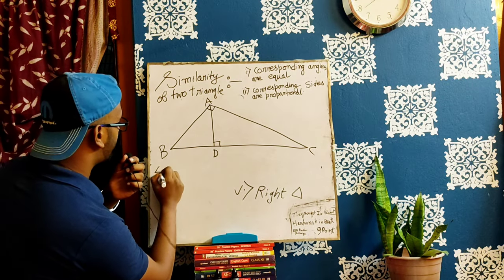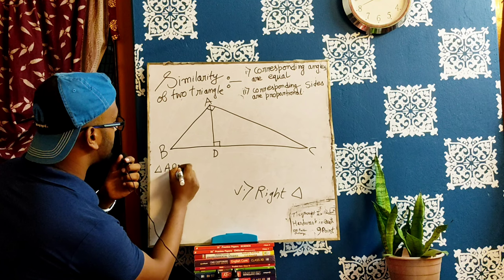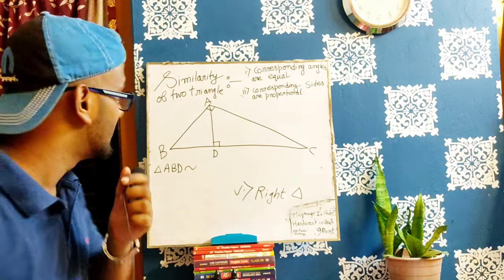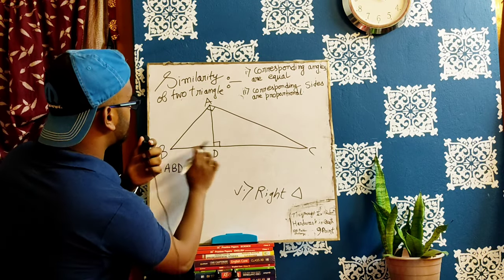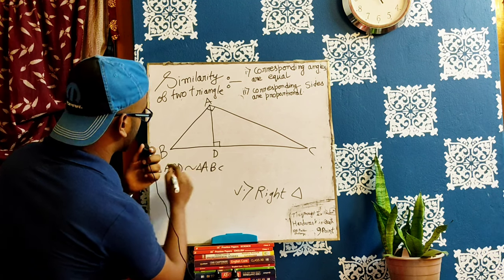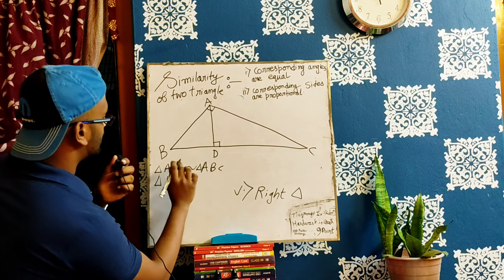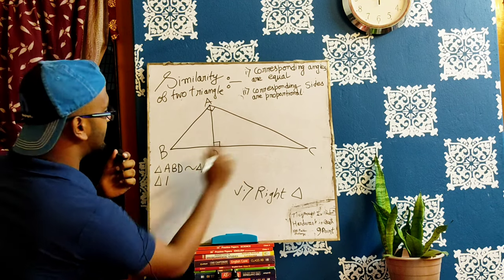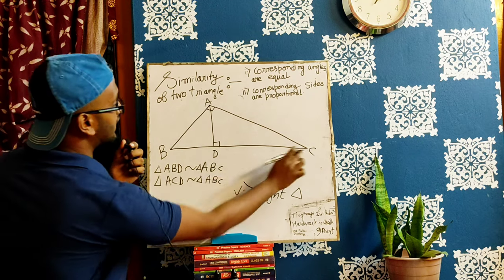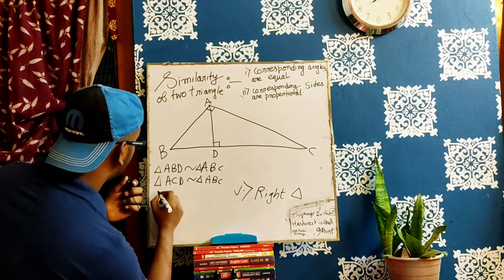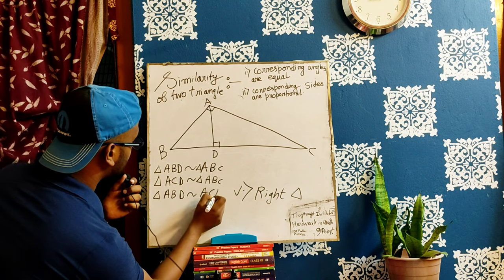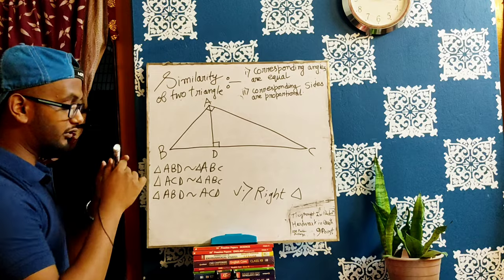Triangle ABD is similar to triangle ABC. Triangle ACD is similar to triangle ABC. Triangle ABD is similar to triangle ACD. These are the similarity results for a right triangle when a perpendicular is dropped from the right angle vertex to the hypotenuse.